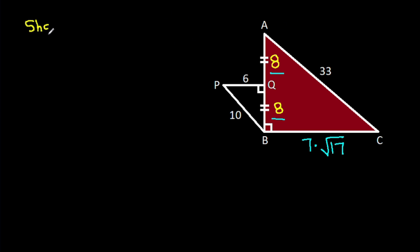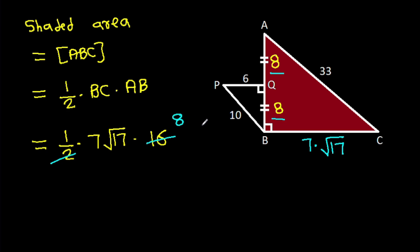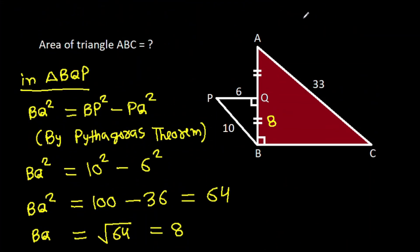Shaded area is area of triangle ABC. It is 1 over 2 times BC times AB. That is 1 over 2 times BC, which is 7 root 17, times AB, which is 16. That will be 56 root 17.